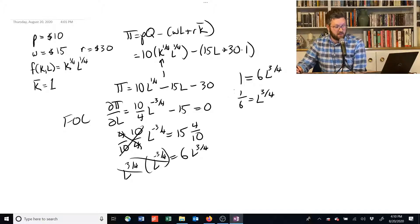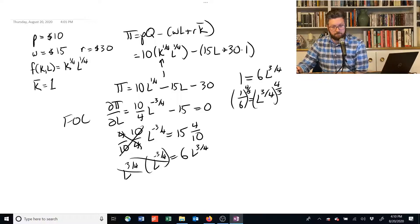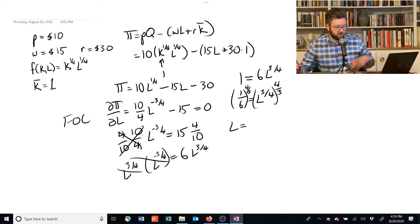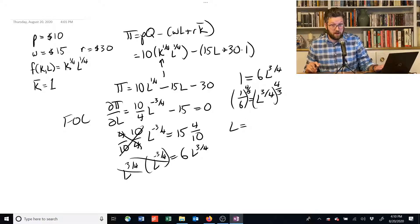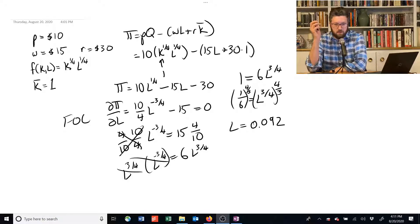And last but not least, to get rid of that exponent, we have to raise it to the power of 4 over 3 on both sides. Okay? So that gives us that labor is equal to, I'm going to do this in my head now, watch. 0.092. That's what labor is equal to.